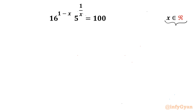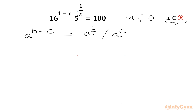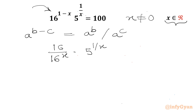As x is in the denominator of the exponent, x cannot be 0. Now I will write one property from exponents: a power (b minus c) is equal to a power b divided by a power c. Let's apply this property here, so I can write the equation as 16 over 16 power x, times 5 power (1 over x), equal to 100.